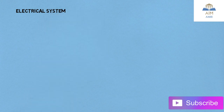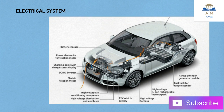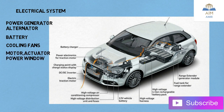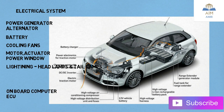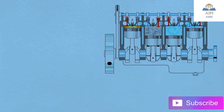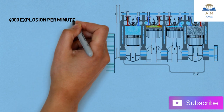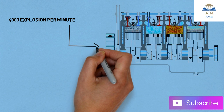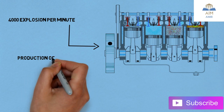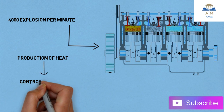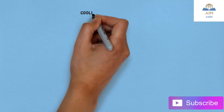The next one is the electrical system in the automobile. As clearly shown in this image, the components include: the power generator or alternator, the battery which stores energy, the cooling fans which are part of the radiator, the motor actuator and power window, the lighting — mainly headlamps and tail lamps — and the onboard computer, that is the ECU or Engine Control Unit. In a particular engine there are around 4,000 explosions per minute, which generate a lot of heat inside the engine, so it is essential to control that heat by transferring it to another area using the cooling system.